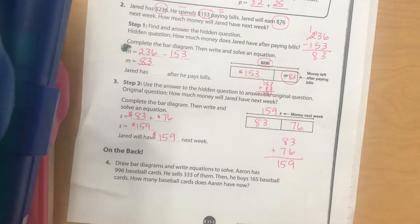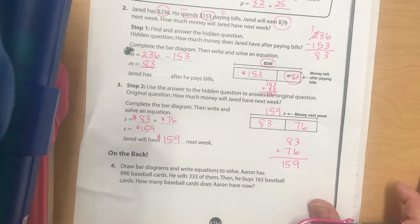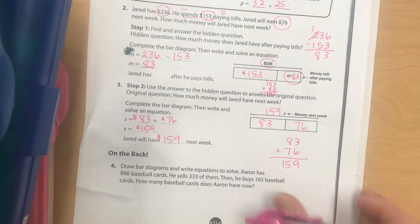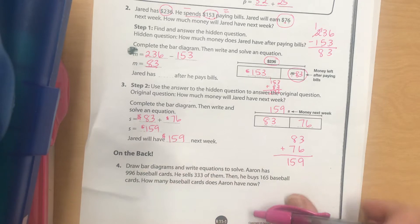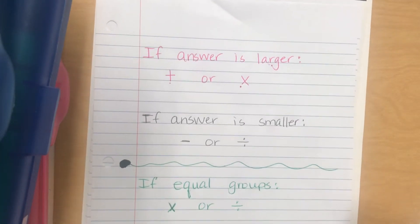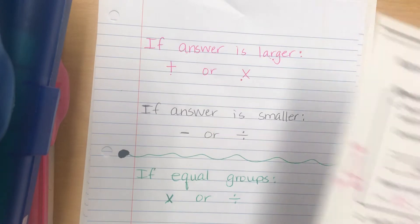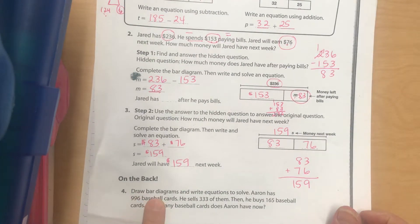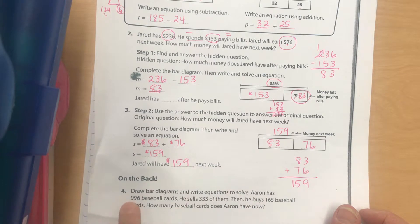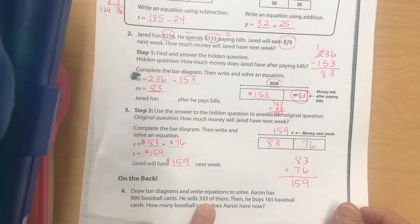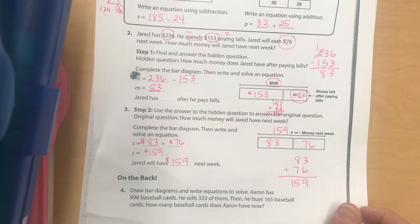Let's look at number four. We can draw bar diagrams, and we will, but I also want us to think about which operation we want to use. Draw bar diagrams and write equations to solve. Aaron has 996 baseball cards. He sells 333 of them, then he buys 165 baseball cards. How many baseball cards does he have?